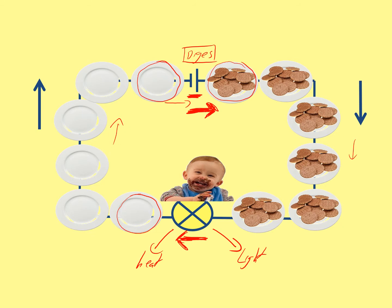One last important thing: each plate doesn't represent one electron. Each plate in this model represents one coulomb of charge — that is billions and billions of electrons all gathered together. So all of these coulombs are moving around the circuit. Instead of saying each electron gains energy, I could say each coulomb of charge gains energy and then loses energy. A better way of putting it is that energy is transferred to one coulomb of charge, and then at the bottom the energy is transferred from the coulomb of charge.